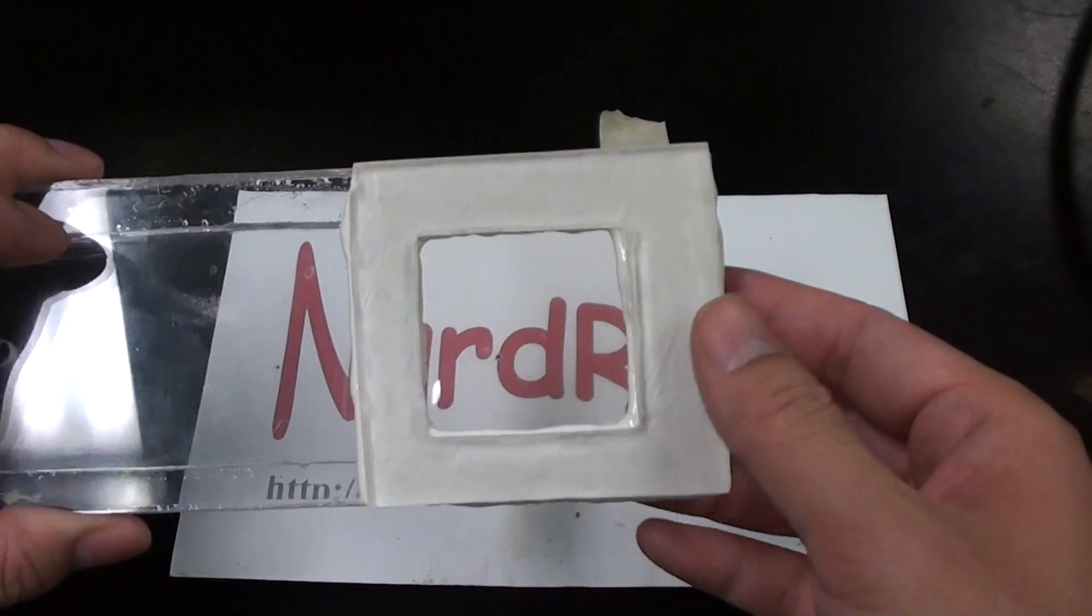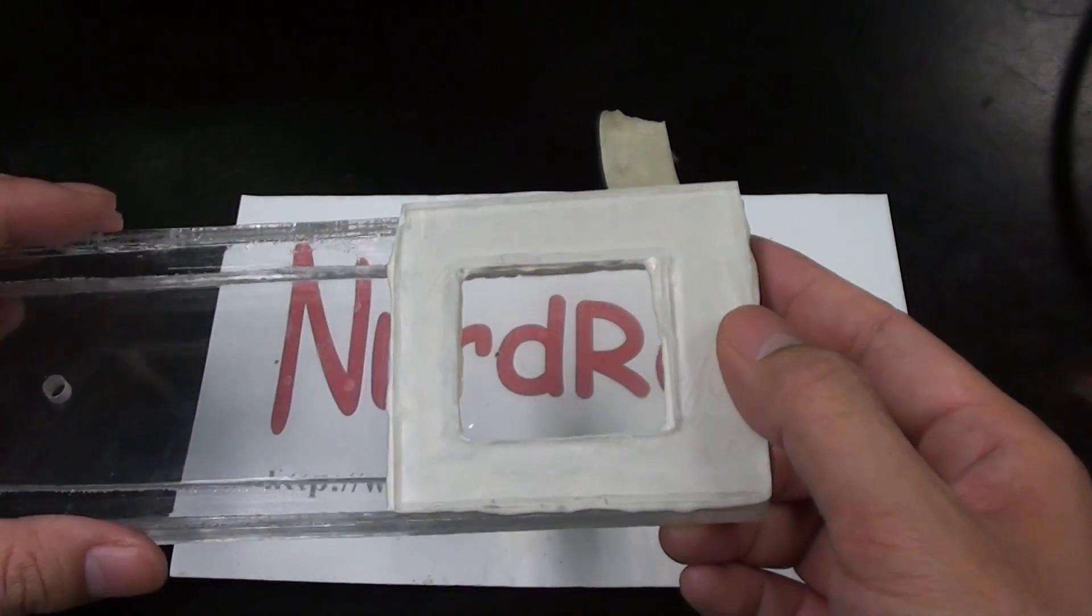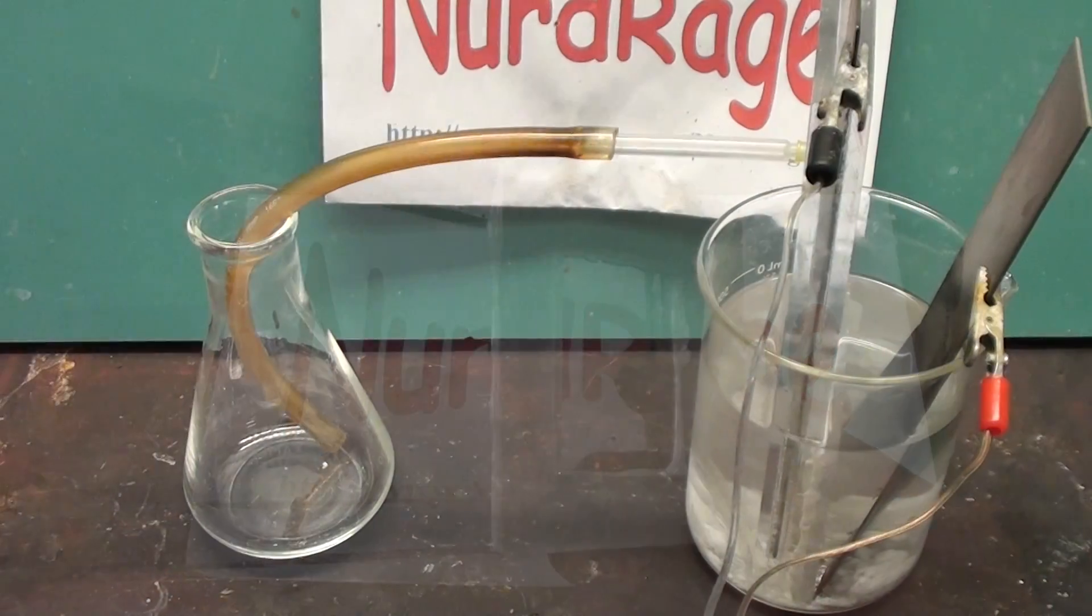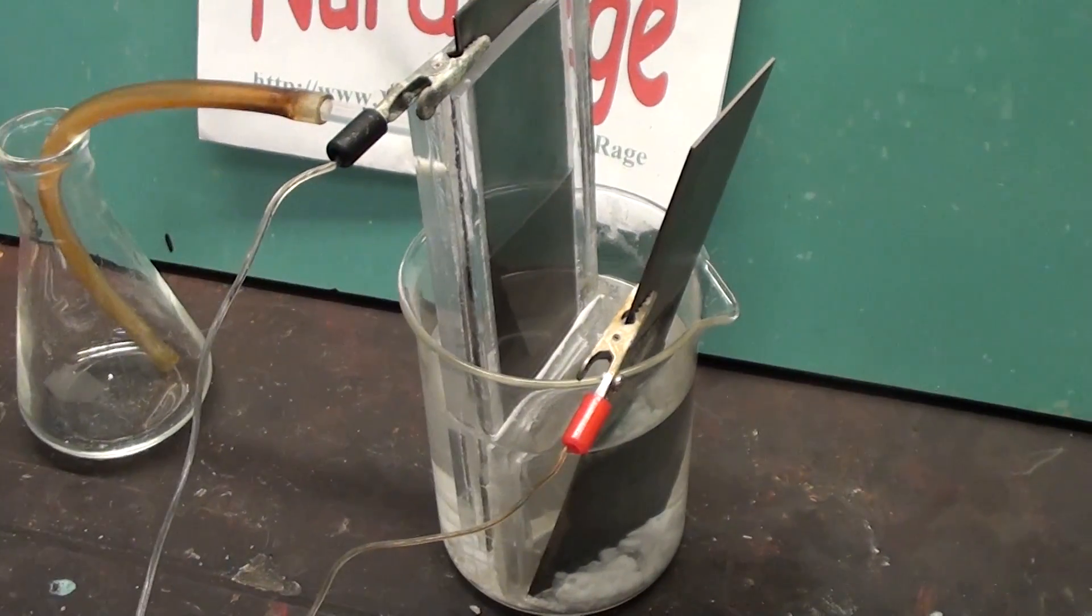Greetings fellow nerds. In a previous video we made a divided membrane cell with nafion, a special type of chemically stable ionic polymer. In this video we're going to use it and make sodium hydroxide out of sodium bicarbonate.